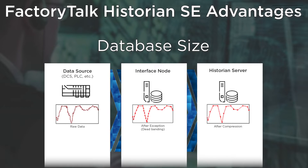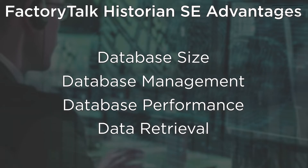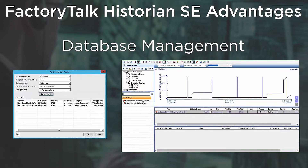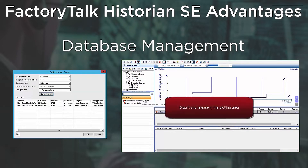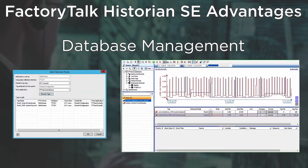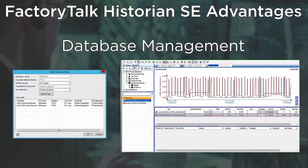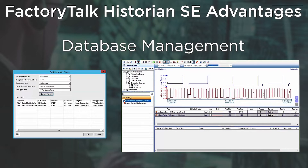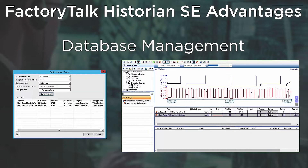Historian SE runs compression and makes that determination — parameters which you define. If the data hasn't changed, why store it? By doing that, it makes the other advantages come into play. Database management, for one — with the data store files being so small, it's much easier to manage those files as far as archiving them. With a relational database, you can build up a lot of data and then have to run SQL statements to clean that data up or back it off the server. Historian SE makes it easy from its interface to deactivate those archives and just copy them over.